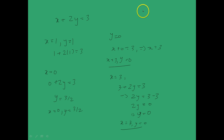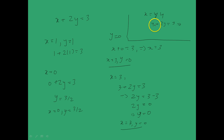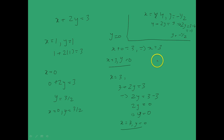Let's consider another case: x equal to 4. So we have 4 plus 2y equal to 3. Subtracting 4 from both sides, 2y equals minus 1, and dividing both sides by 2 gives y equal to minus 1 by 2. So another solution is x equal to 4 and y equal to minus 1 by 2. If we keep going, we notice that x plus 2y equal to 3 has infinitely many solutions. Therefore a linear equation in two variables has infinitely many solutions.